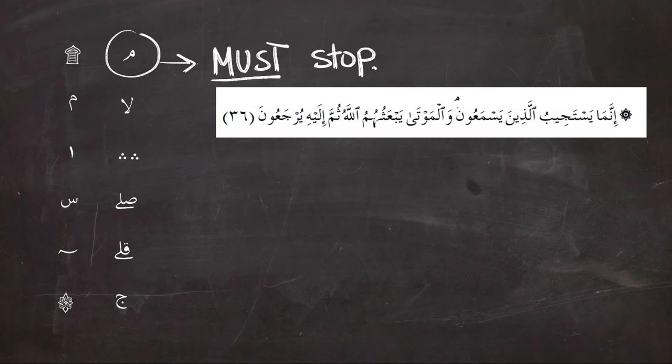We're going to start with the first one, a symbol that looks like Meem. It means you must stop while reading, otherwise the meaning of the ayah or verse will change. In this example, you should stop at the symbol by reading. So we have to stop at the symbol of Meem.